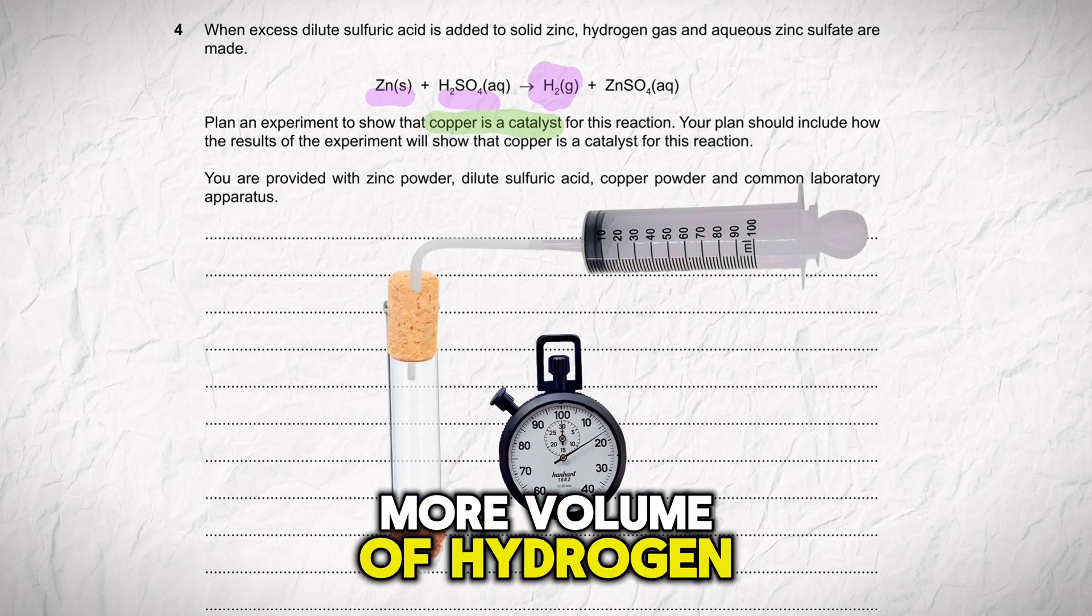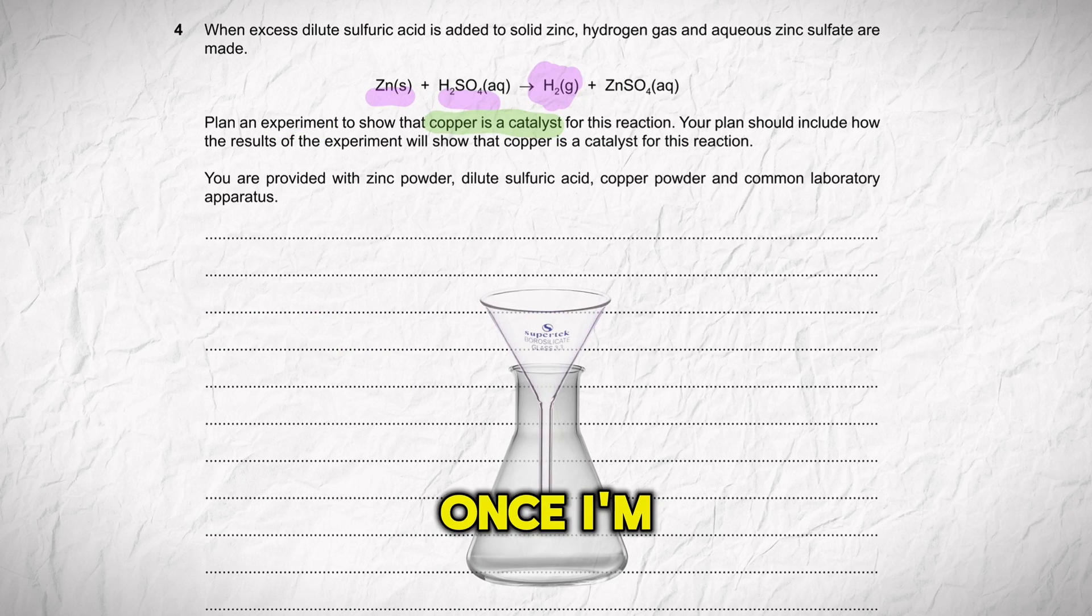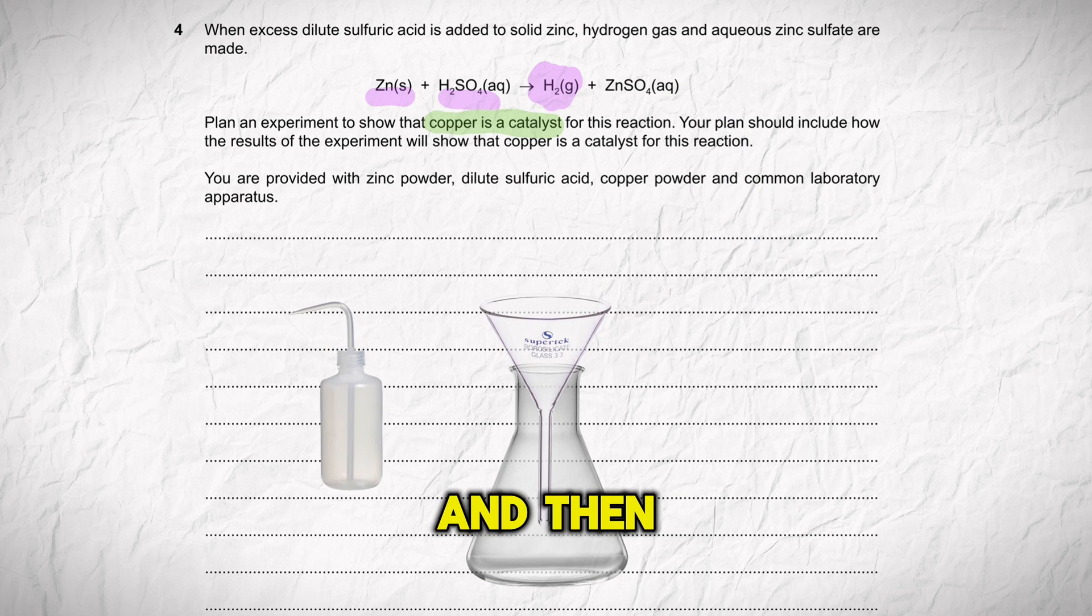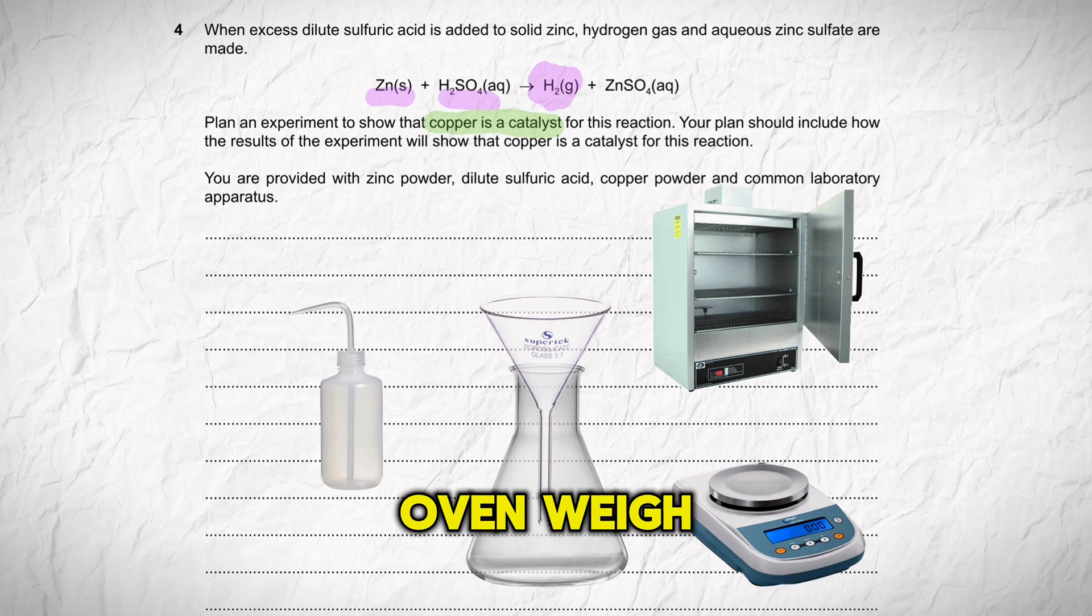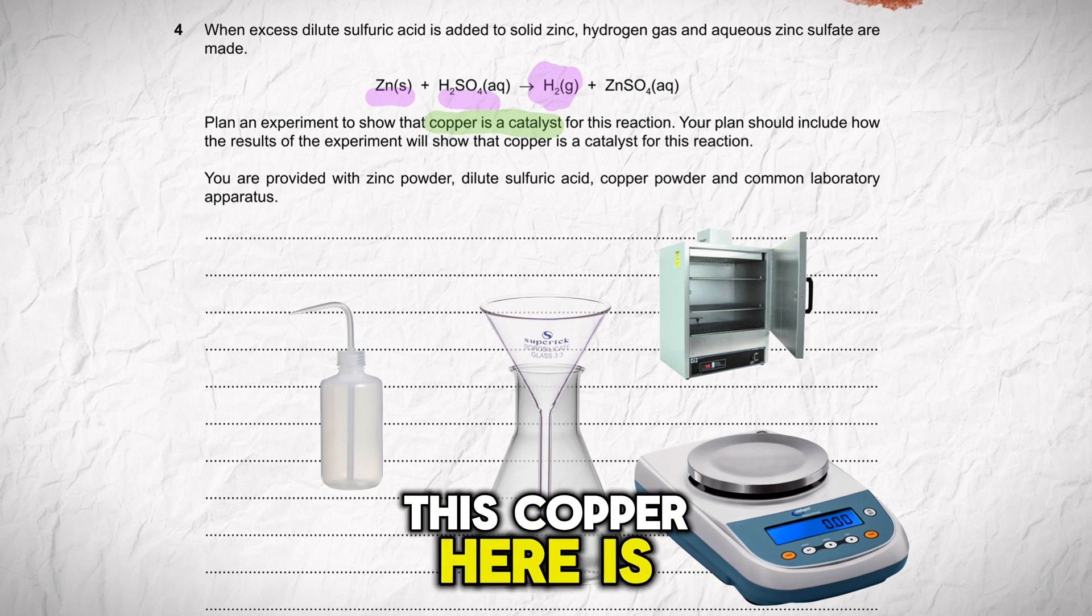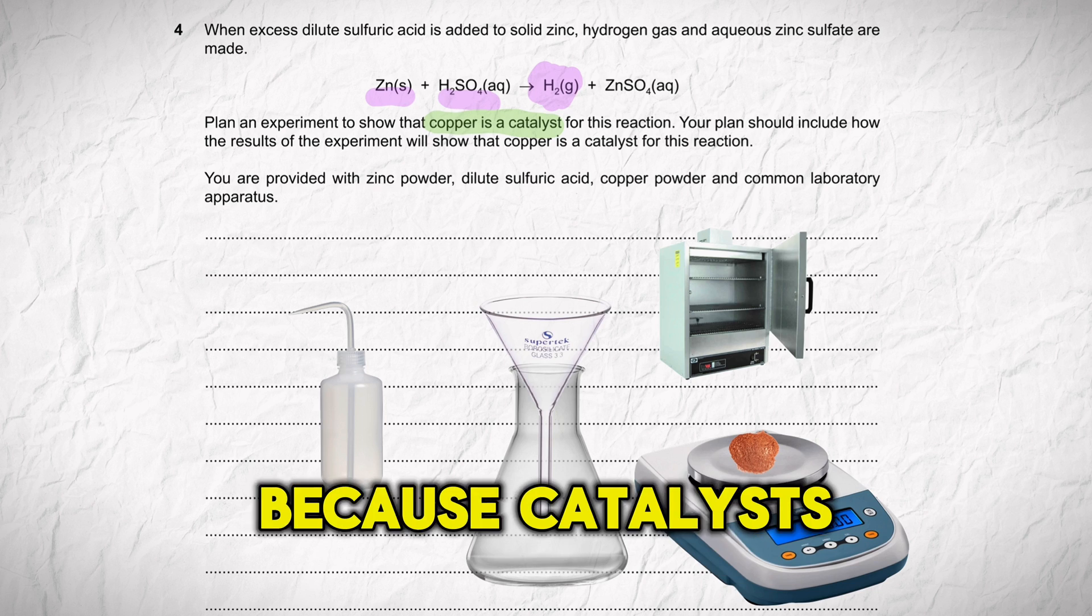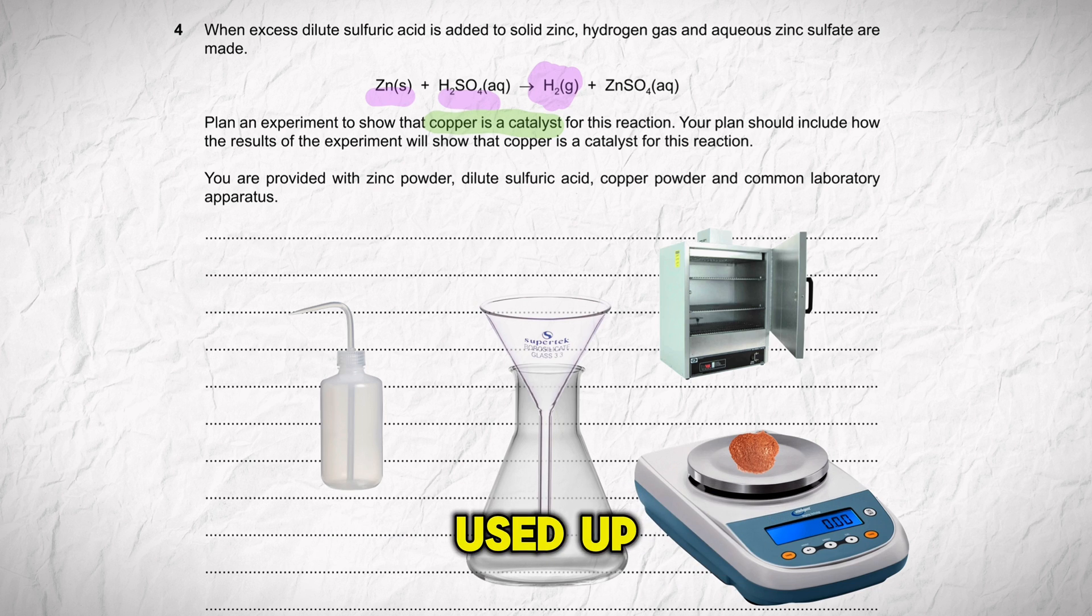Once I'm done, I'm going to filter out the copper, rinse it, and then dry it in an oven. I'll weigh its mass. Since copper is a catalyst, the mass of copper should remain constant because catalysts don't get used up during the chemical reaction.